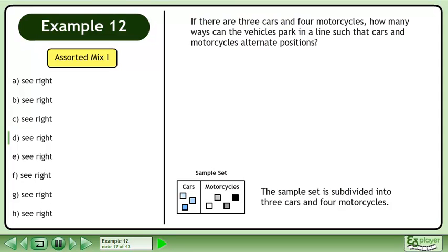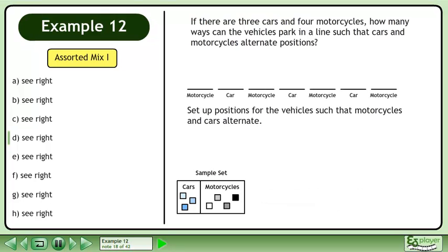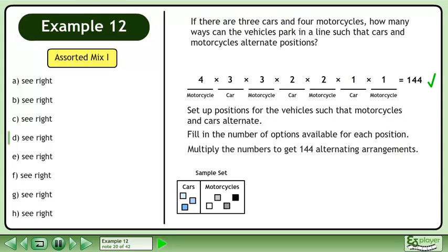The sample set is subdivided into three cars and four motorcycles. Set up positions for the vehicles such that motorcycles and cars alternate. Fill in the number of options available for each position. Multiply the numbers to get 144 alternating arrangements.